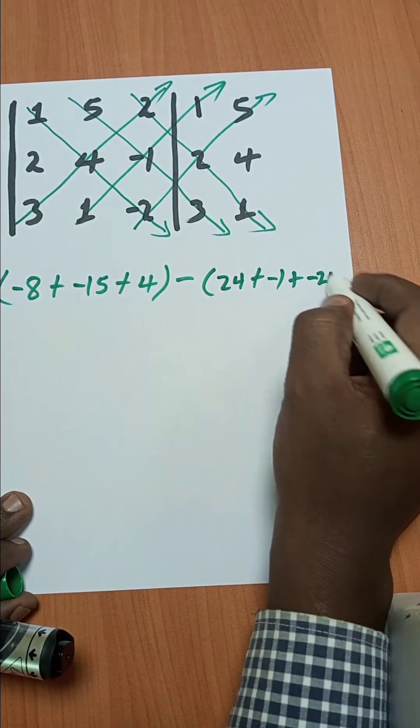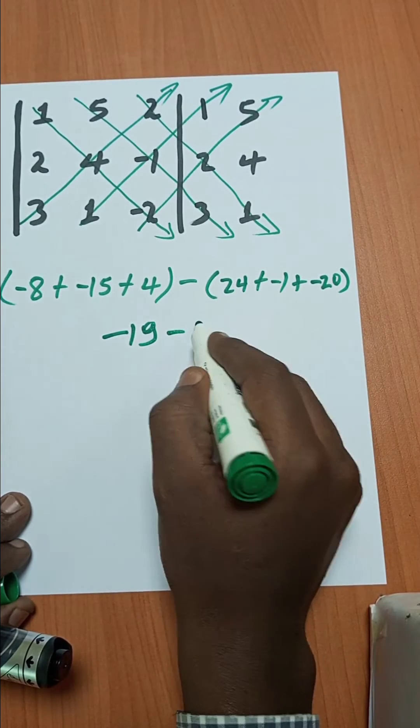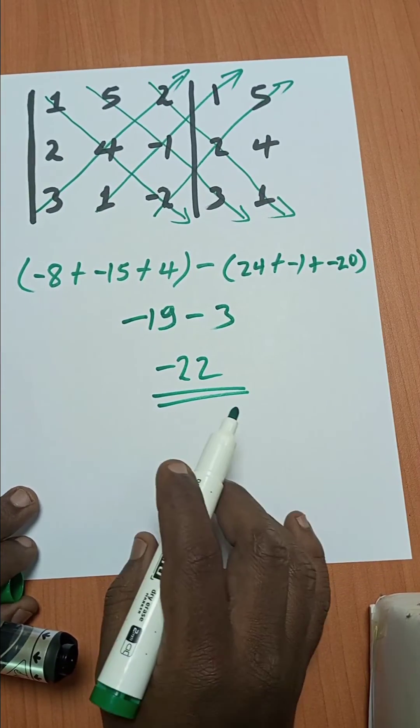Take the sum. This sum is negative nineteen minus three, so the result is negative twenty-two. This is the determinant of the three by three matrix.